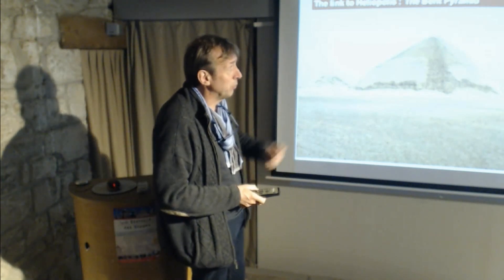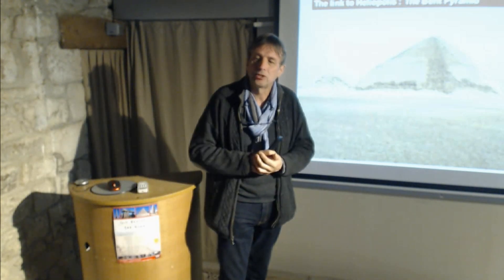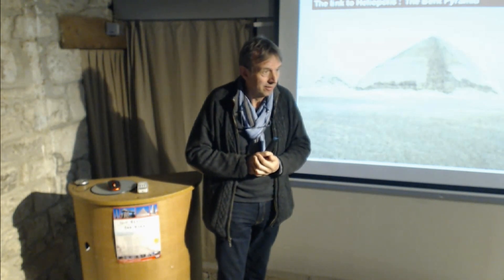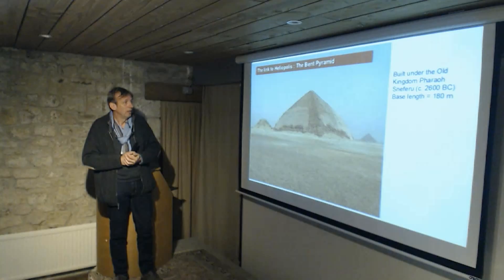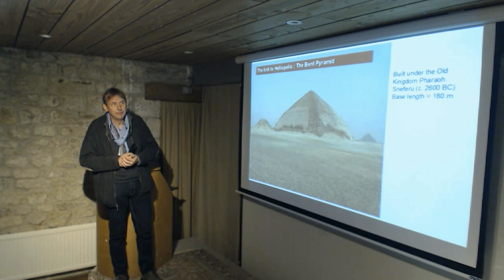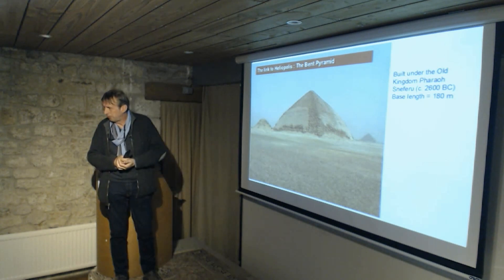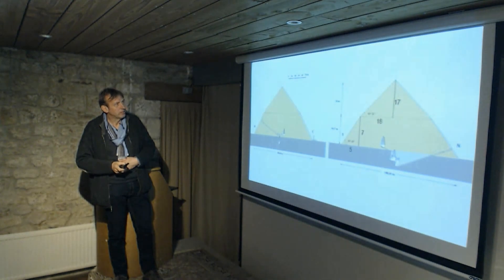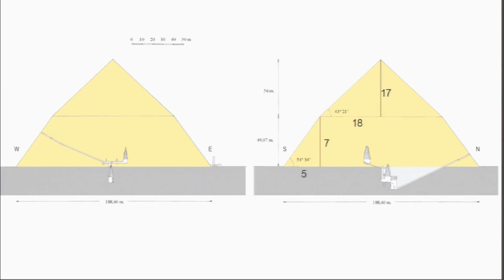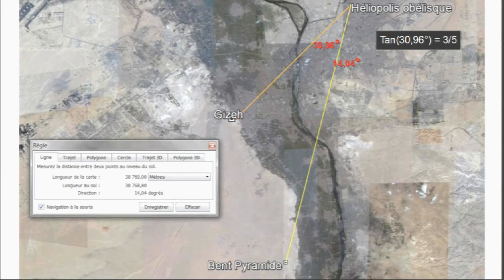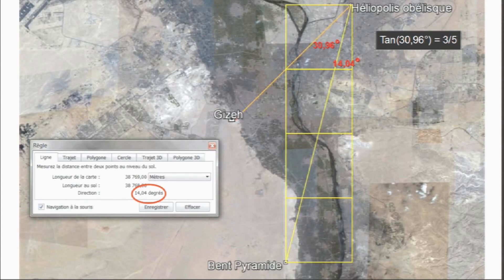This is the Bent Pyramid. It's a very big one — 180 metres at the base, nearly two football pitch lengths along one side. It's a very old one, built by Sneferu around 2600 BC, supposed to predate the Great Pyramid. The two angles are very interesting: the lower angle is 7 over 5 and the upper one is 17 to 18. The Bent Pyramid, when placed from the Heliopolis obelisk, is at 14.04 degrees — exactly a quadruple square — over a distance of 38 kilometres.